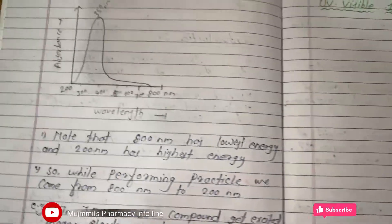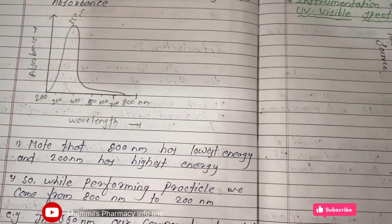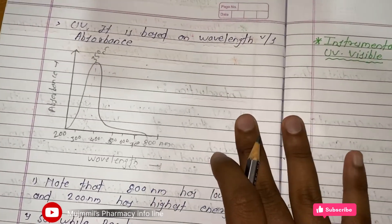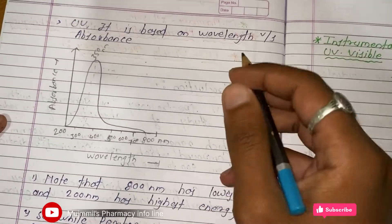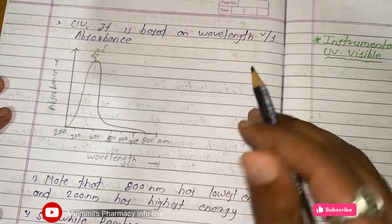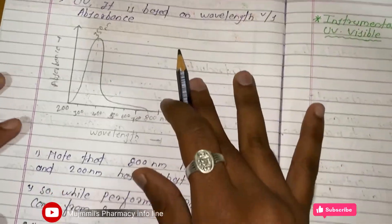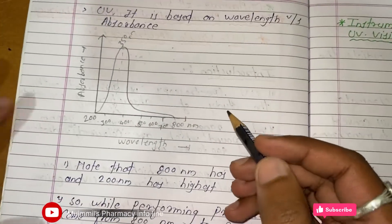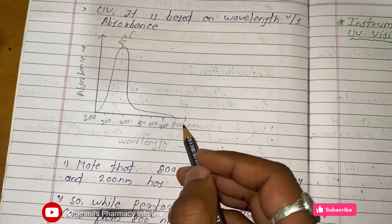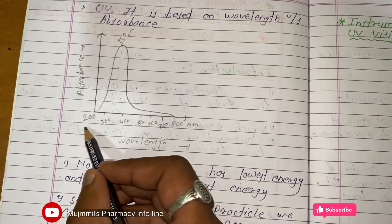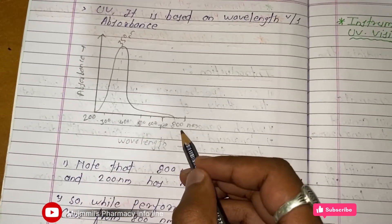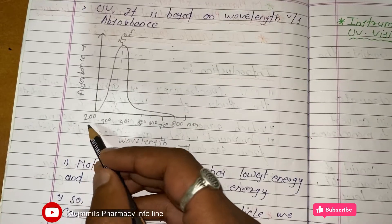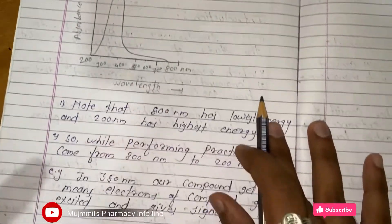We understand UV spectroscopy with the help of a graph of wavelength versus absorption. Note that when we perform the practical, we scan from 800 nanometers to 200 nanometers, because 800 nanometers has the lowest energy and 200 nanometers has the highest energy.